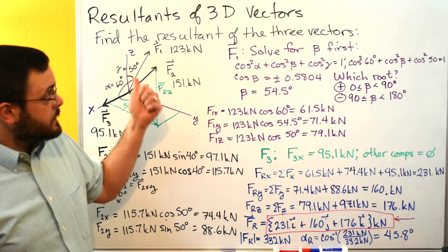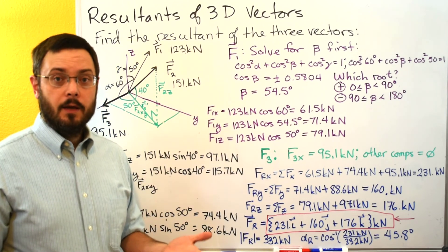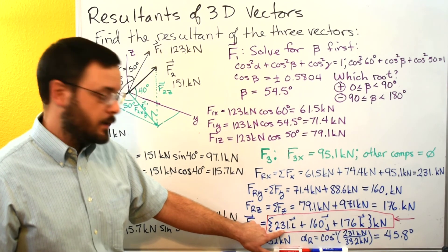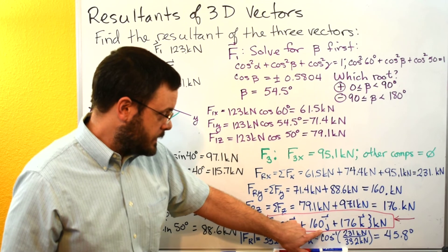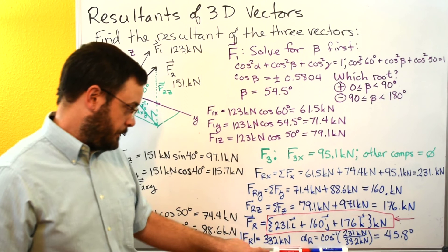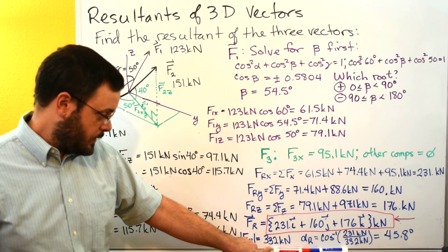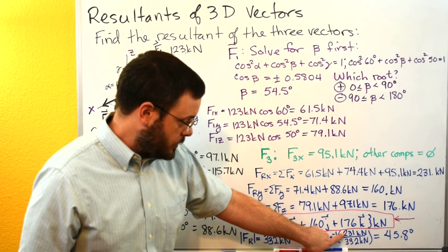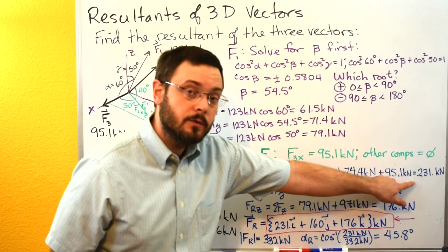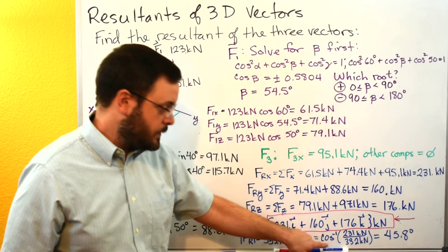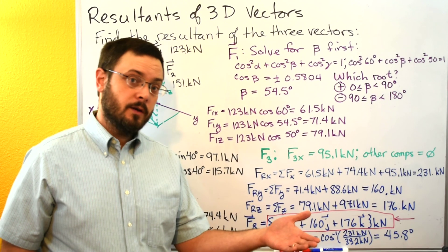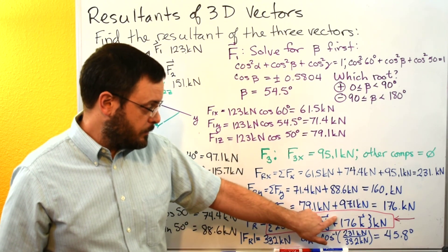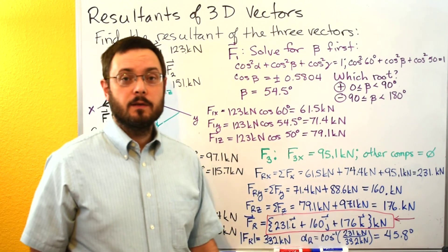If the problem asks for magnitude and coordinate direction angles, you can calculate those too. Square each component — 231, 160, and 176 — add them together, and take the square root to get the magnitude: 332 kilonewtons. Then calculate each coordinate direction angle: alpha is the inverse cosine of 231 divided by the magnitude, beta is the inverse cosine of 160 divided by the magnitude, and gamma is the inverse cosine of 176 divided by the magnitude.